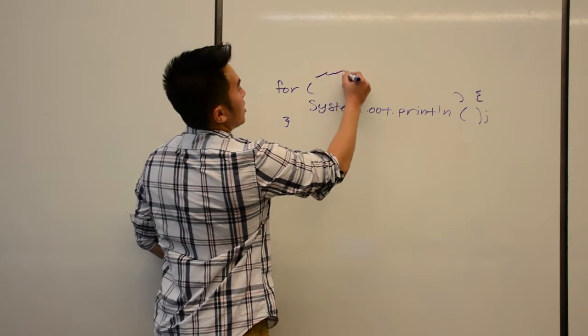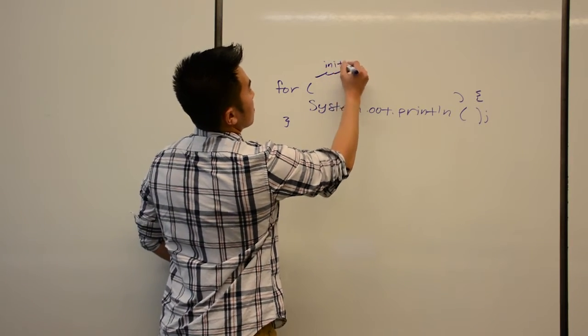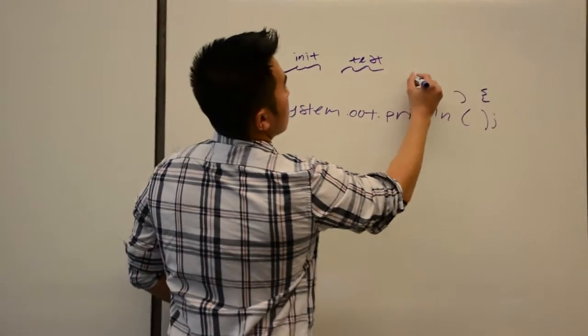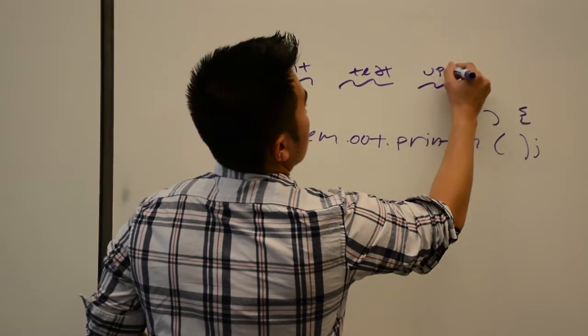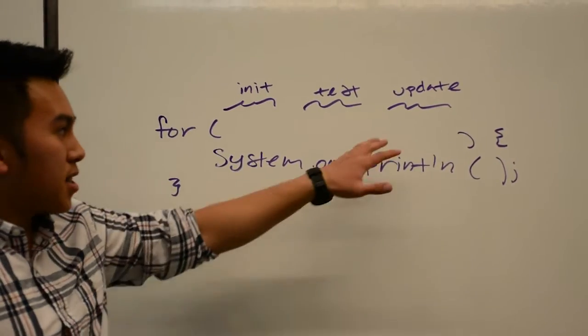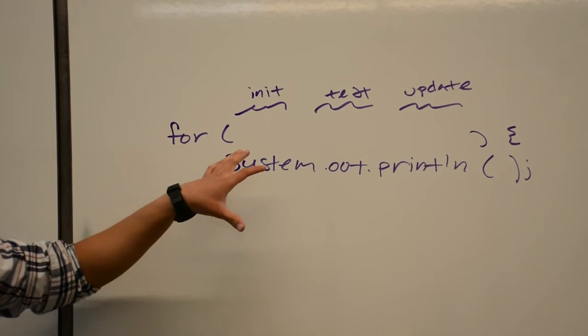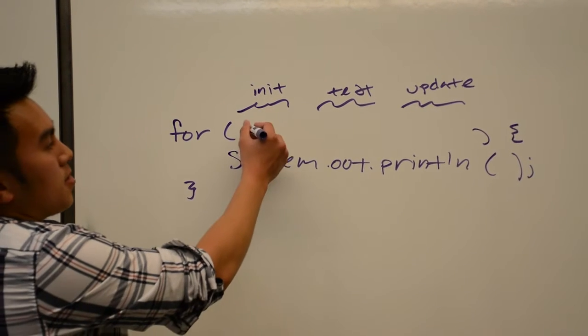So first we're going to initialize something, we're going to make a test, and then we're going to make something that will update what we initialized. Now we're going to initialize a variable inside these parentheses.